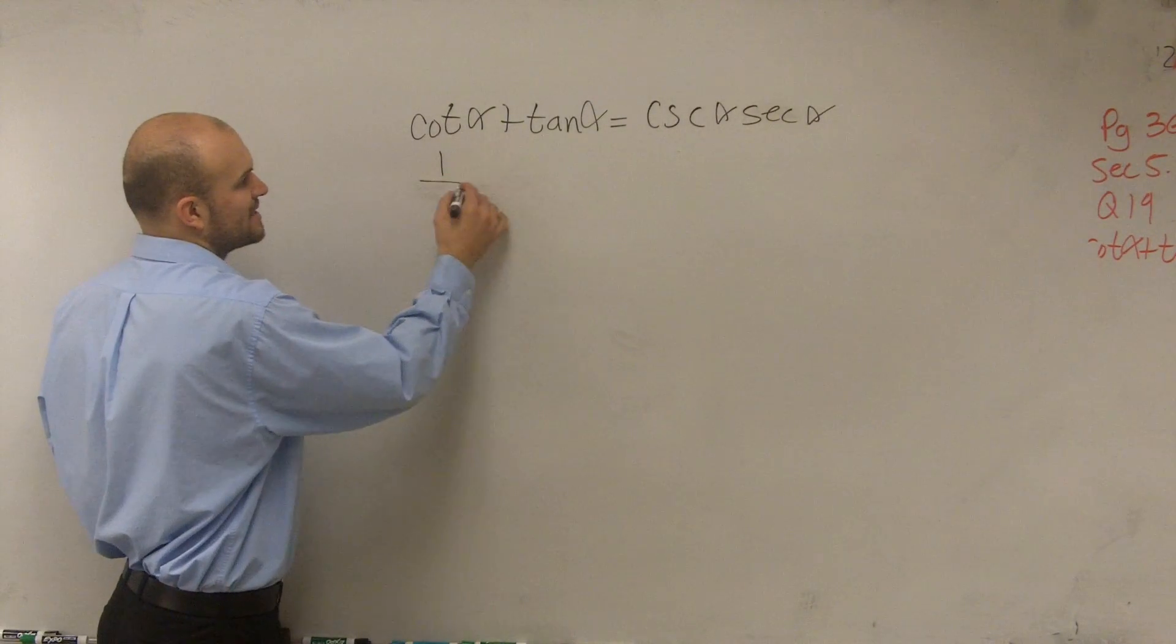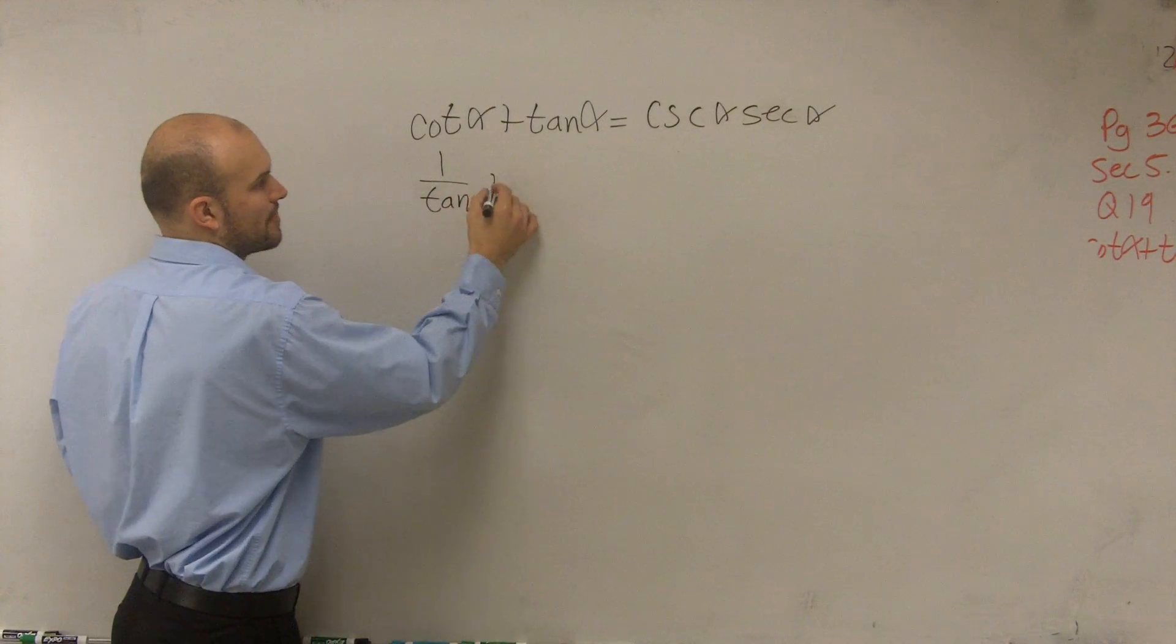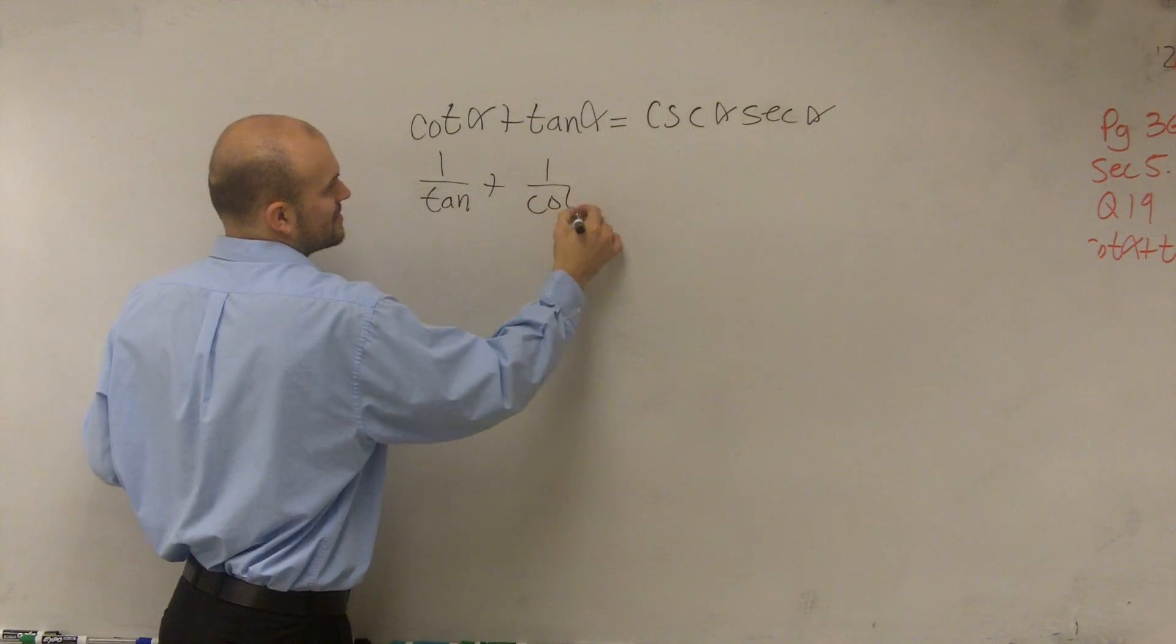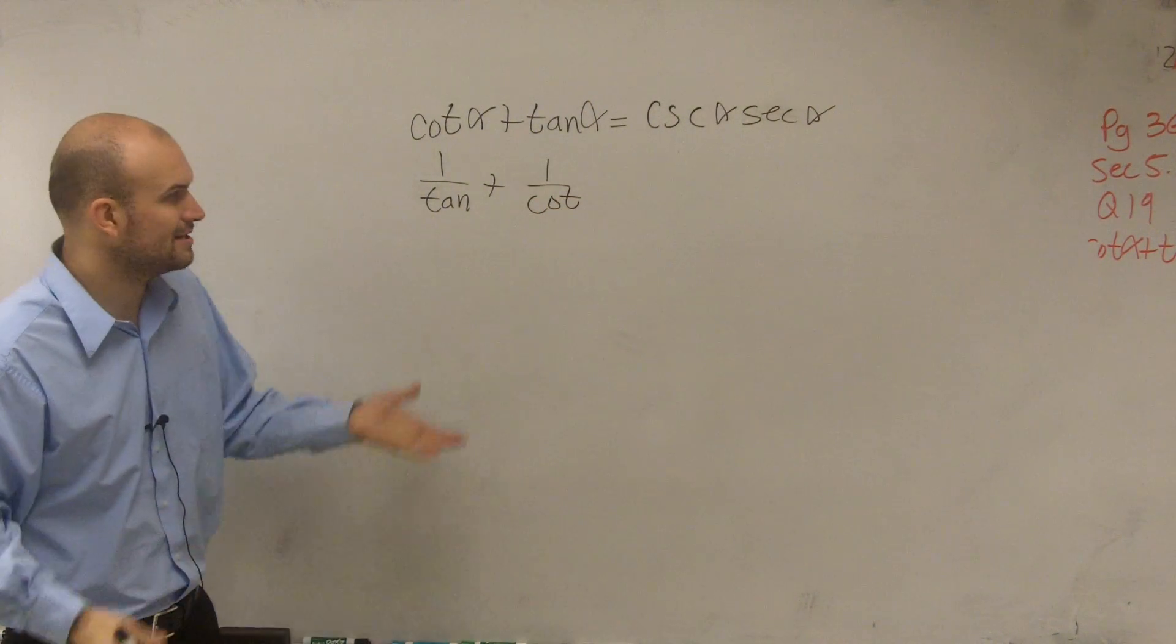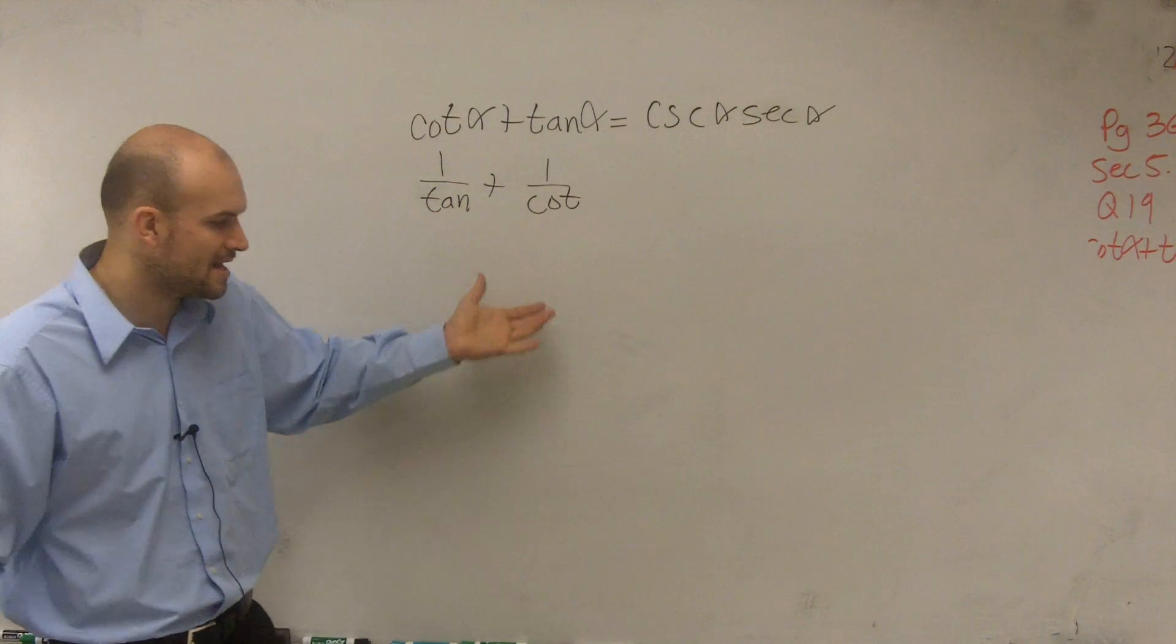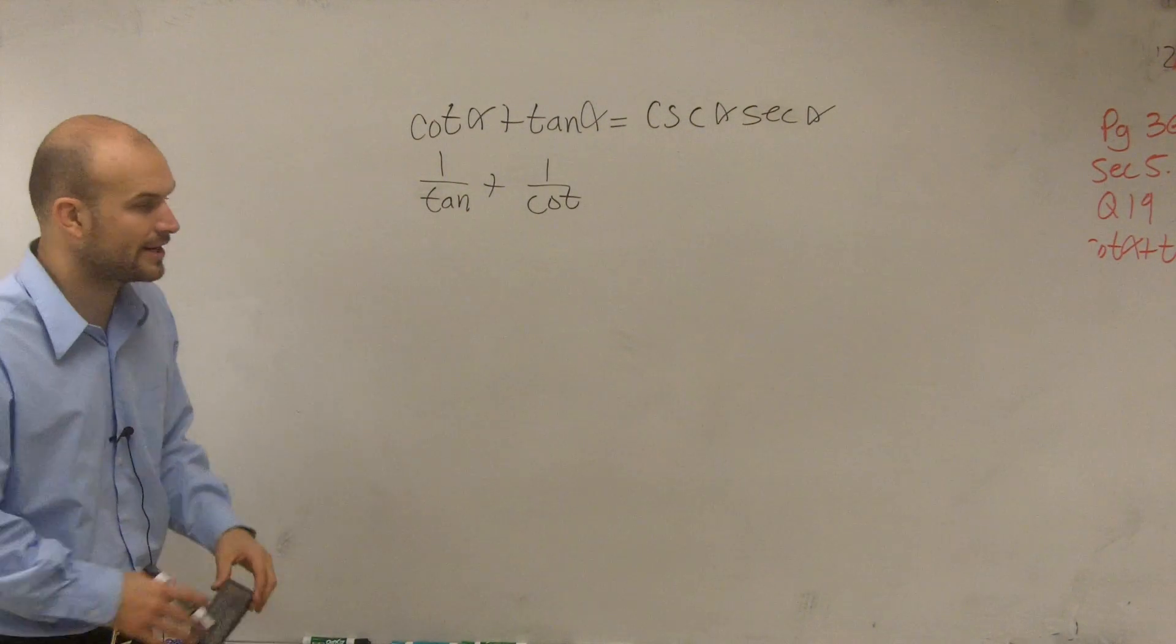And even by writing this as 1 over tangent plus 1 over cotangent, that's not going to help you out either because those don't have common denominators. So there's a couple different ways you guys can do this.